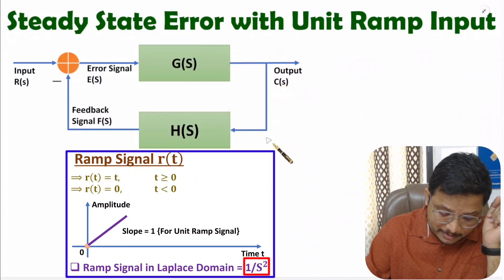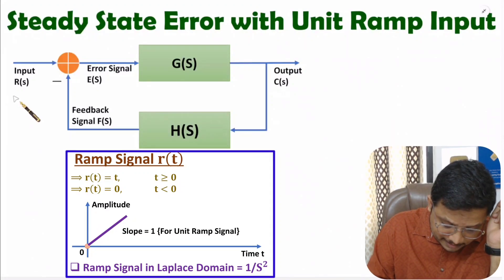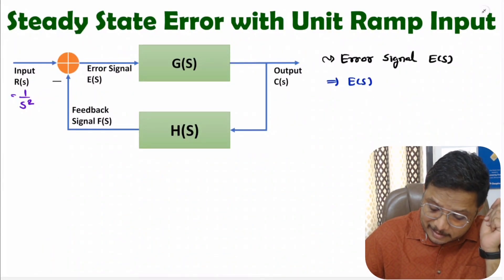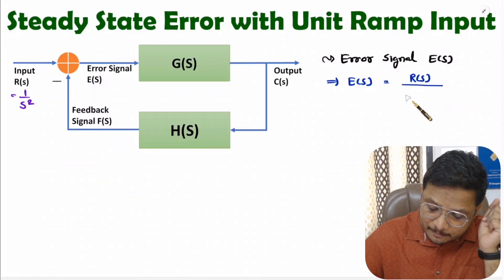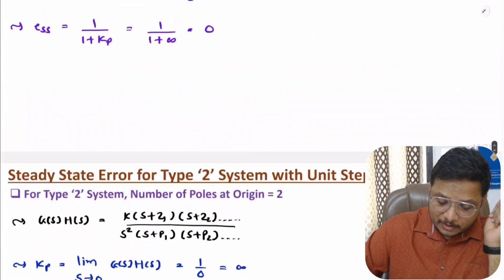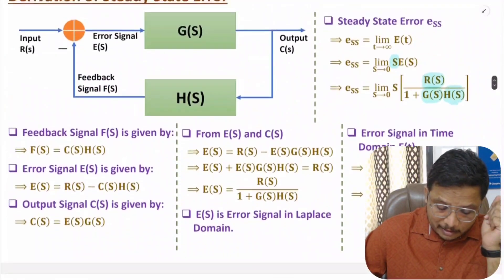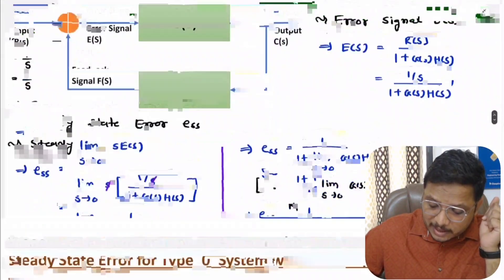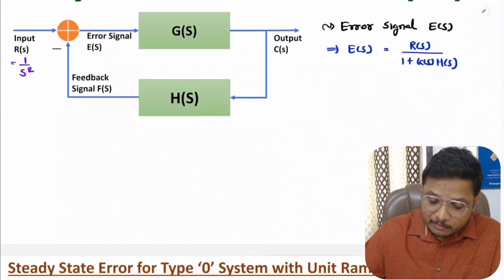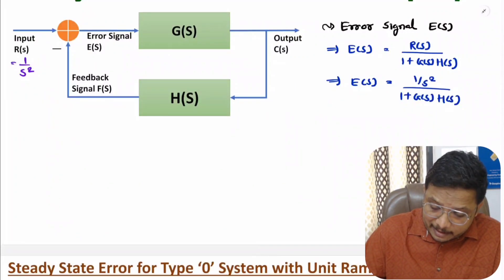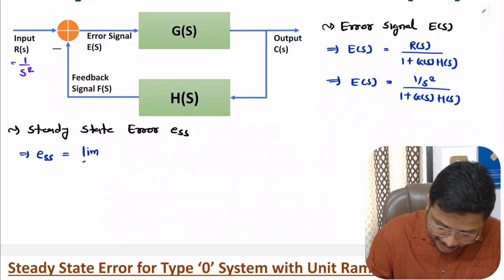We have a negative feedback system where input r(s) is a ramp input, meaning 1/s². Steady state error is based on the error signal. The error signal e(s) is r(s) divided by 1 plus G(s)H(s), which I have already derived in earlier videos. Using the error signal, we can identify the steady state error, where r(s) = 1/s². Steady state error is: limit s→0 of s·e(s).